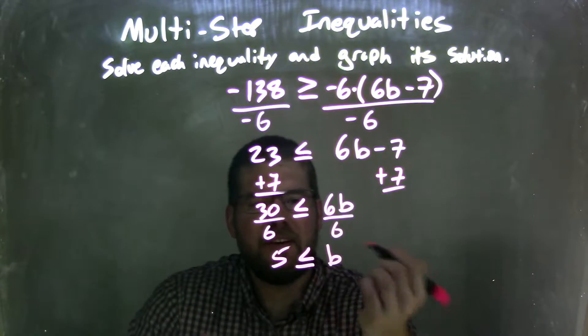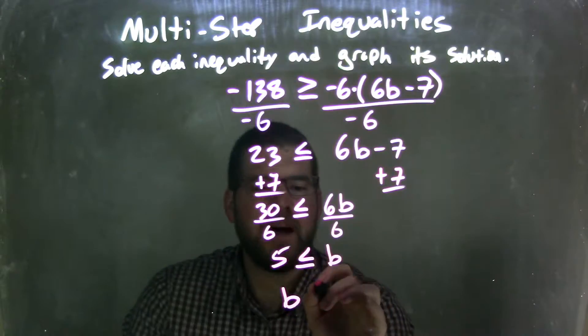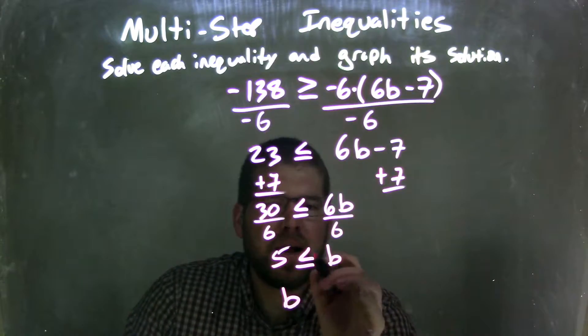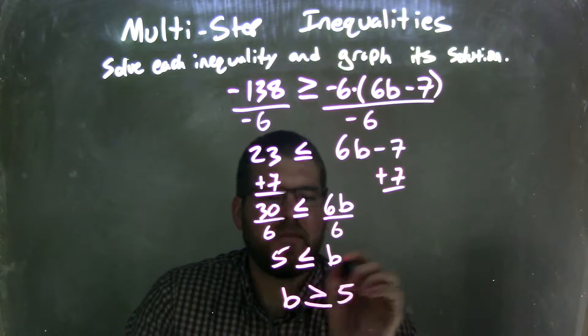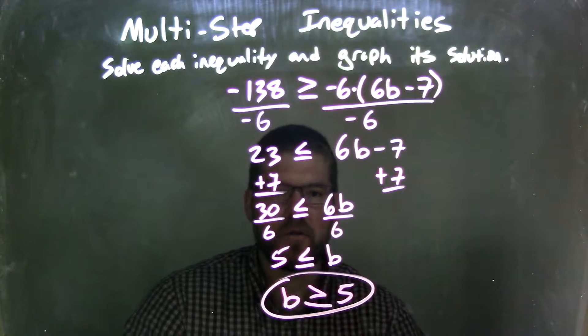Now I can rewrite this to have b come first because that looks nice and neat. So if b comes first, I then have to flip that inequality again from a less than or equal to sign to a greater than or equal to sign, and have just a 5 on the right. So b is greater than or equal to 5.